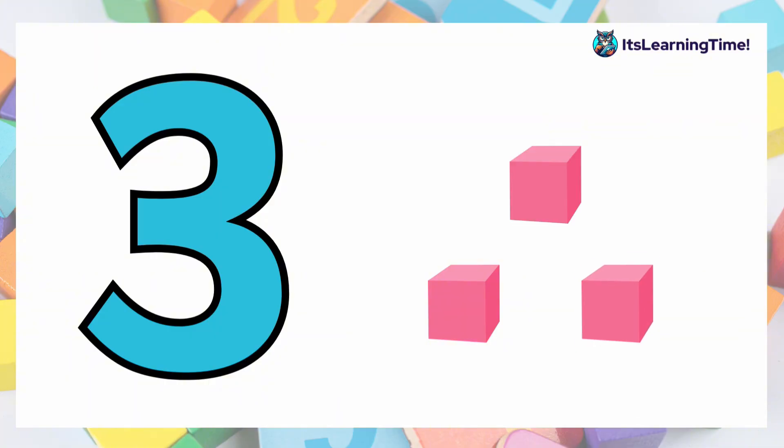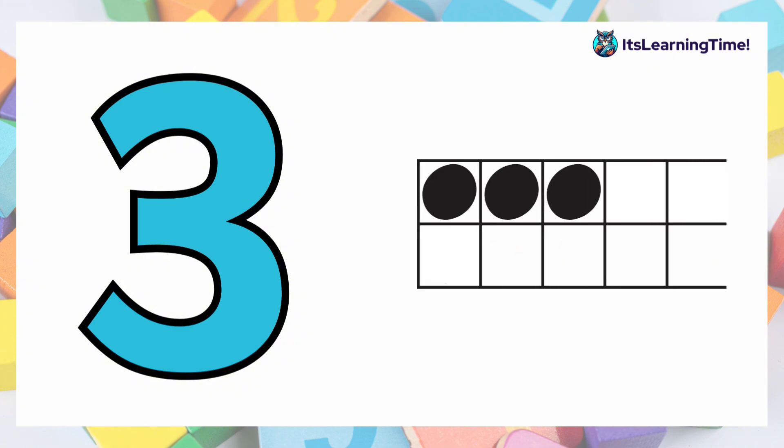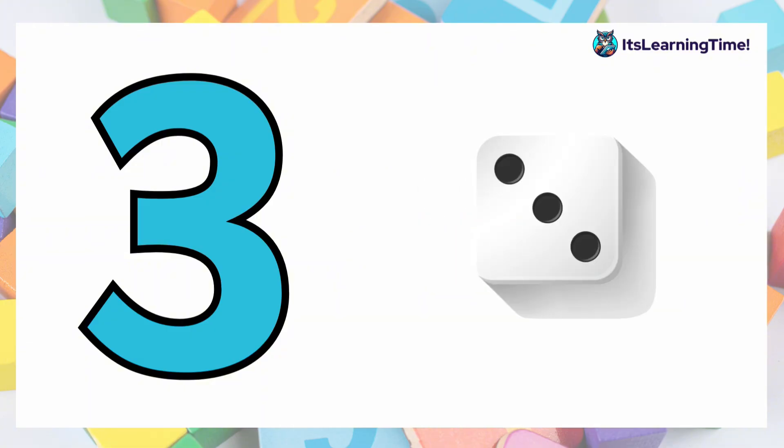Fantastic job. Now let's see the other ways that number three can be represented. We have three fingers, three on a five frame. Here is number three on a ten frame. Three, three on a ten. Three, three on a die.